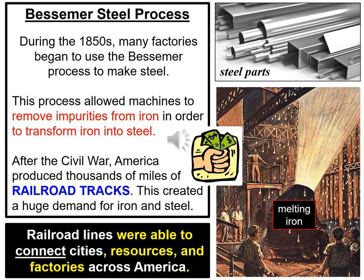The Bessemer Steel Process. During the 1850s, manufacturers started using a process called the Bessemer process — a way to make steel. Steel comes from iron. That iron is melted at a very high temperature and transforms into steel. That steel is very important because America is trying to connect east to west with railroads, and you're able to use that steel to make the railroad tracks. The railroads are being built and will connect cities to resources and factories all across America, thanks to the Bessemer process.